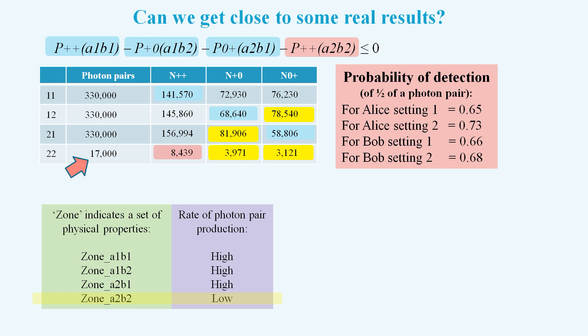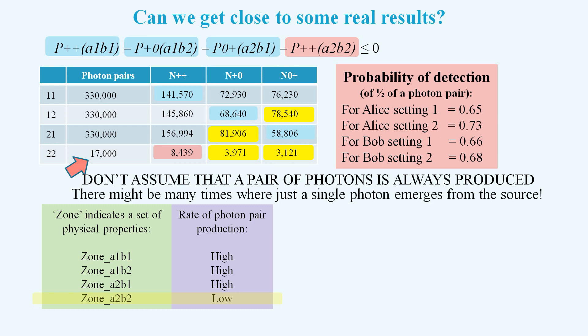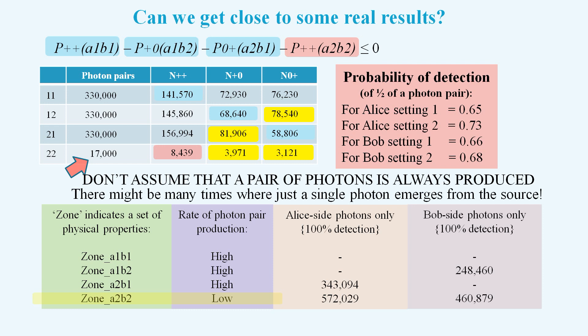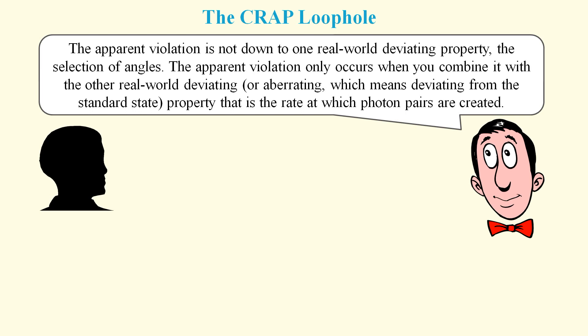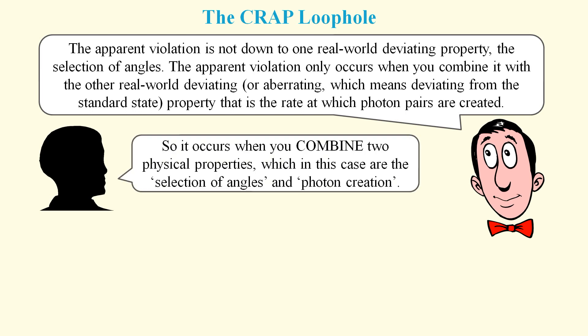So how can we duplicate that? A simple way is to not assume that a pair of photons is always produced. We can simply say that we've got these singles on the Alice side and these singles on the Bob side. Note that I've assumed 100% detection so that we can simply add these figures to the corresponding figures highlighted in yellow and get the desired results. Normally detection would be less than 100% and so these singles counts would need to be a bit higher to get the same results. So the apparent violation only occurs when you combine it with the other real world deviating property — that is the rate at which photon pairs are created. You could say we are combining aberrating properties, where aberrating means deviating from the standard state.